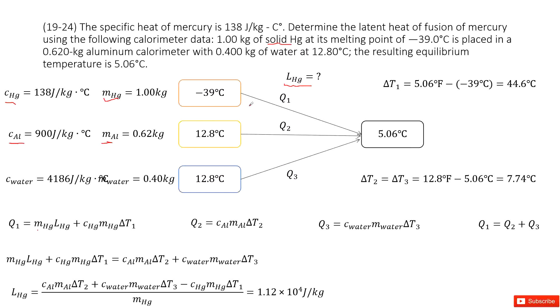And then from liquid mercury, the temperature changes to final temperature. Can you find the heat? Yes. c_m ΔT. So this is equal to Q₁.